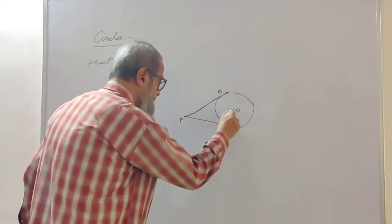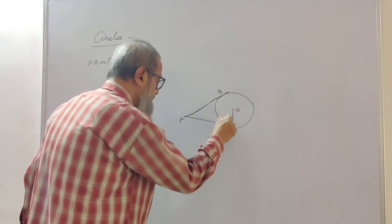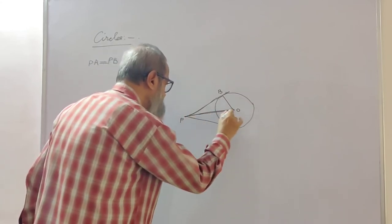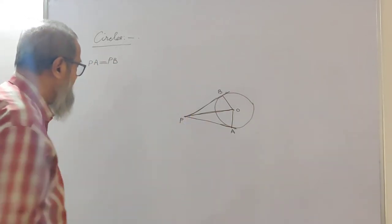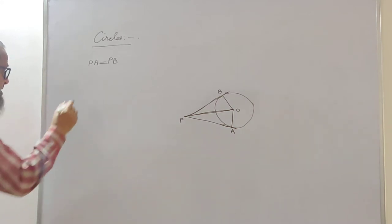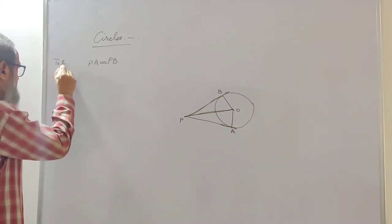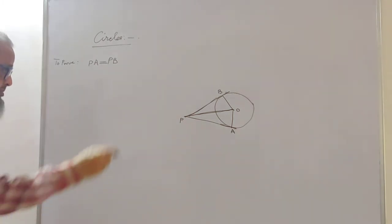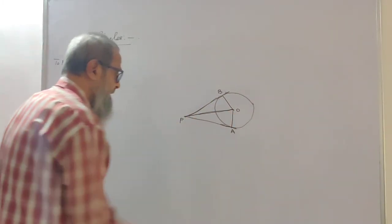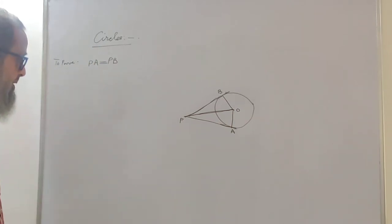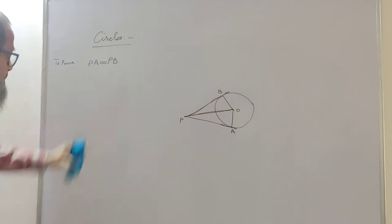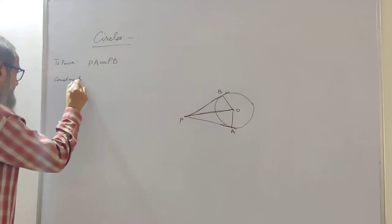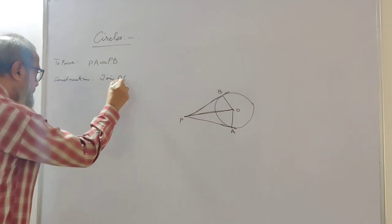To prove PA equals PB geometrically, the construction is: join OA, OB, and OP. Given: circle with center O, P is an external point, and PA and PB are two tangents drawn from P. To prove: PA = PB. Construction: join OA, OB, and OP.